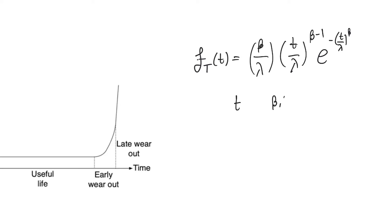Beta and lambda are both parameters of this probability density function, but lambda is actually the more important parameter because it represents the failure rate of the system — how fast the system fails — and it encompasses the quality of the product. The lower the lambda, the better the product, as it encompasses all the information about the useful life failure rate. Beta, on the other hand, encompasses information about the phase in which we are.